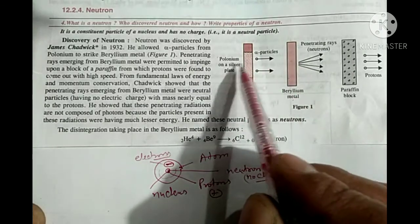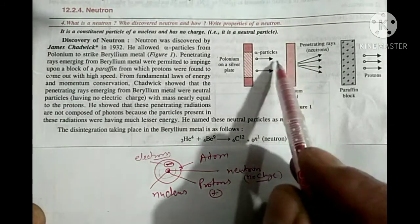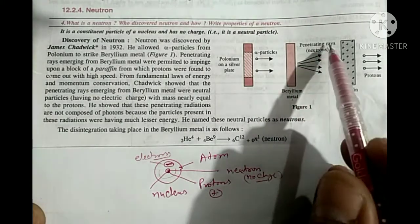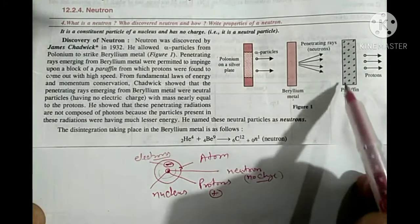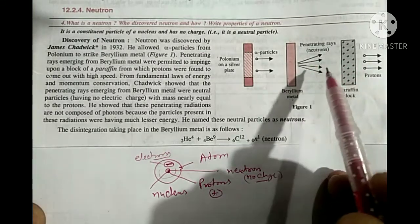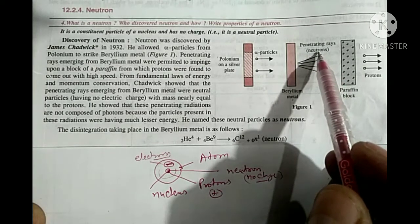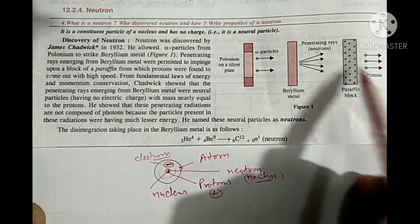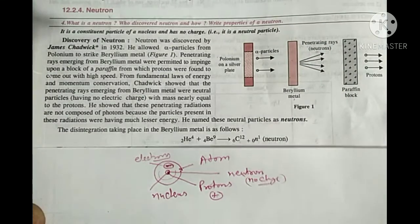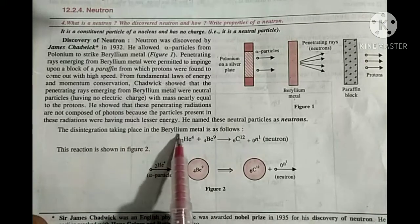Chadwick allowed alpha particles emerging from polonium to strike beryllium metal. The penetrating rays emitted from beryllium metal, when incident on paraffin block, caused protons to emerge. These penetrating rays had no charge but had mass comparable to protons. Chadwick named them neutrons. The disintegration taking place in beryllium metal follows this reaction.